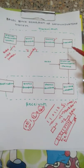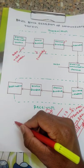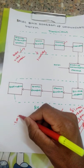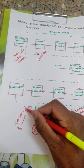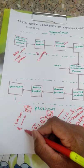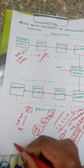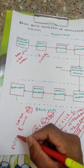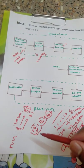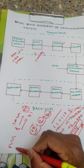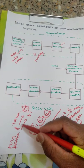Next is the modulator, which acts just like a vehicle. Suppose you want to go to a village 100 kilometers away — you can't go by walking, so you take a bike or bus as a carrier. Similarly, the message signal is very weak and can't reach a far receiver on its own. So we add a high-frequency carrier signal whose strength is much greater, and by combining it with the message signal we can cover a larger distance.